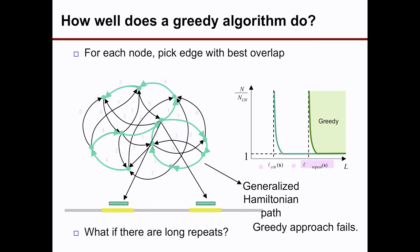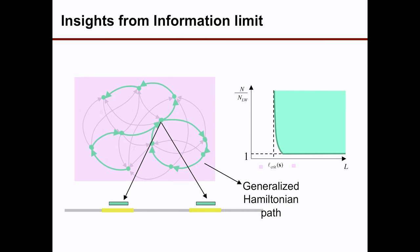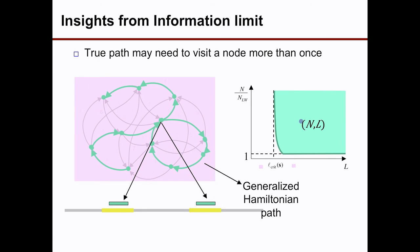It turns out we can push much closer to the lower bound by being greedy, but not so greedy. The trick is how to be not-so-greedy. The information limit tells us that if we want to push further, we need to visit a node more than once. If the true path forces us to visit a node three times — as happens with an unbridged triple repeat — there will be intrinsic uncertainty detected by the information limit, placing that problem instance outside the feasible region. Therefore, we only need to consider paths that visit each node at most twice within the information-feasible region.